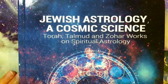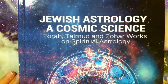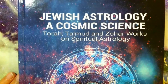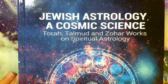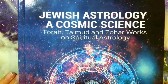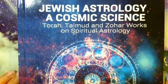This is a goal called the Tikkun Elevator — it's time to start focusing on this work of Jewish astrology, a cosmic science: Torah, Talmud, and Zohar works on spiritual astrology.